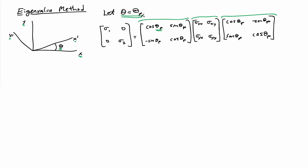And the output of that transformation, because I've chosen theta equals theta p, is a diagonal stress tensor. So I have the first principal stress and the second principal stress here, but the shear stresses are zero. And that's by, in a way, definition of what we get as a result for the principal frame.